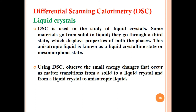DSC is also used in the study of liquid crystals. Some materials go from solid to liquid through a third state that displays properties of both phases. This anisotropic liquid is known as the liquid crystalline state or mesomorphous state. The state of matter having properties between those of a conventional liquid and solid crystals is called a liquid crystal. Using DSC, we can observe the small energy changes that occur as matter transitions from solid to liquid crystal and from liquid crystal to isotropic liquid.